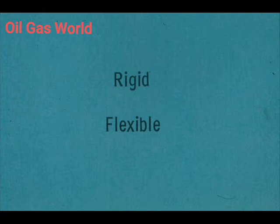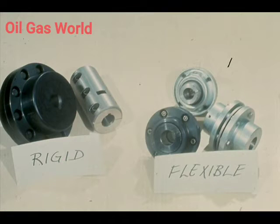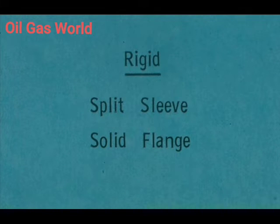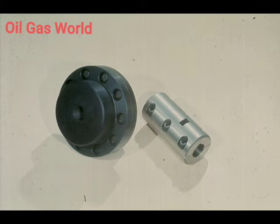In fact, there are so many types that we will only cover the basic types in this training module. We will deal with two types of rigid couplings and three types of flexible couplings. You will find that these five examples are very common throughout industry. Our first two types of couplings are in the rigid class: the split sleeve and solid flange types. Neither of these types will bend or give — they are designed to solidly connect the drive and the driven shafts, making them in effect a single shaft.